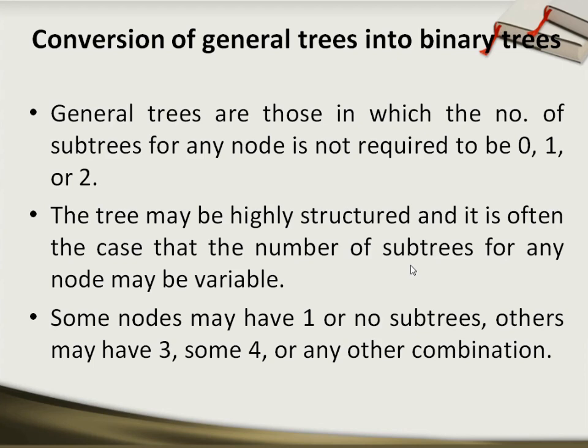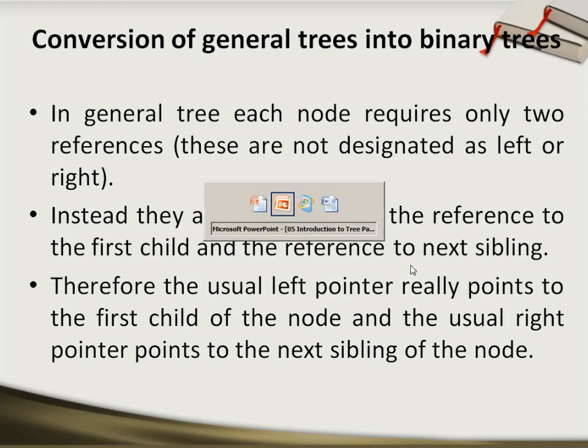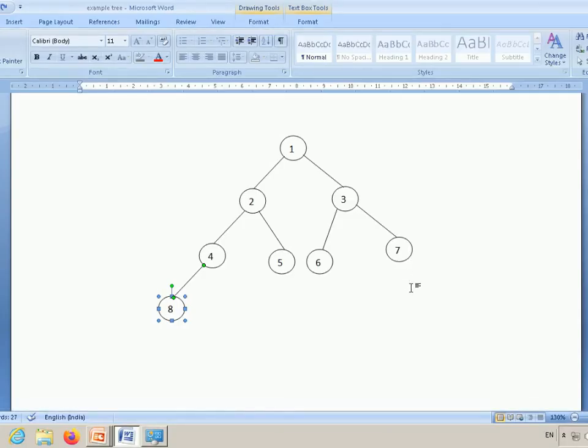Now, as we know, there is no restriction on the number of nodes. We cannot say that there exists a left or right subtree. Instead, there exists a first child, then the next link is considered a reference to the next sibling, the third link will be referred to as the next sibling of the second one, and so on.